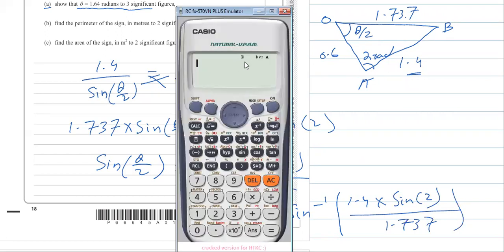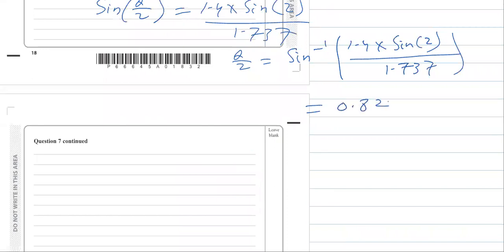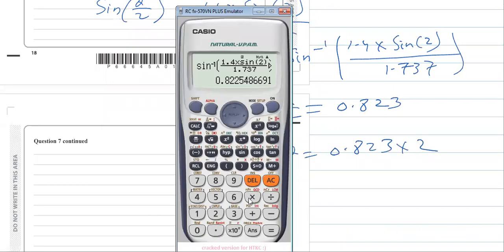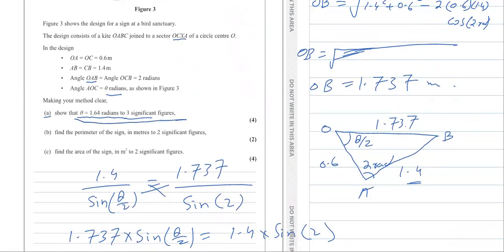Calculating sine inverse of (1.4 times sine 2) divided by 1.737 gives 0.822, so rounding that gives 0.823. Therefore theta over 2 is 0.823 radians, so theta equals 0.823 multiplied by 2, which gives 1.645. To 3 significant figures, theta equals 1.64 radians, which proves the required result.